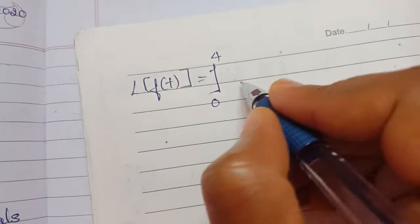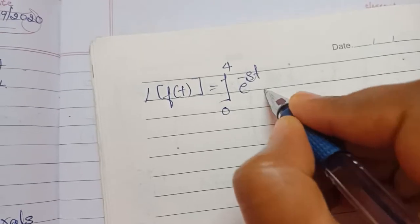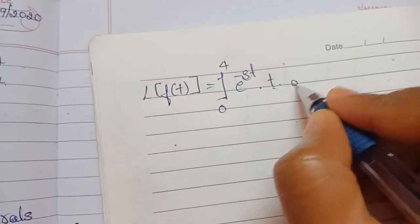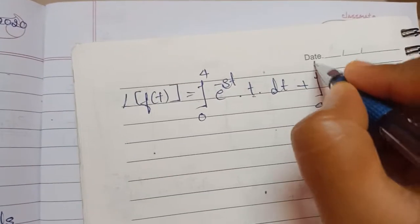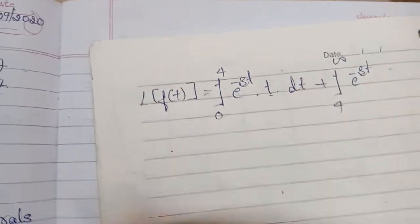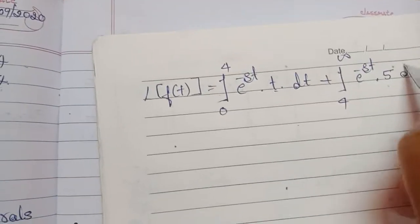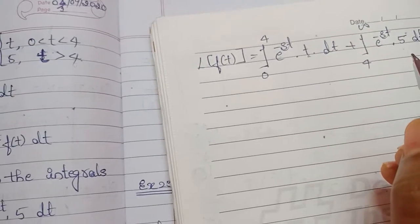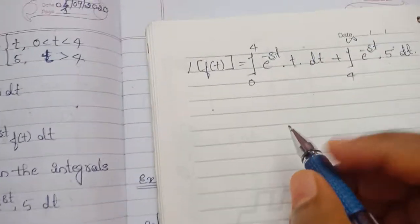Substituting, we get: integral from 0 to 4 of e^(−st) · t dt, plus integral from 4 to infinity of e^(−st) · 5 dt.